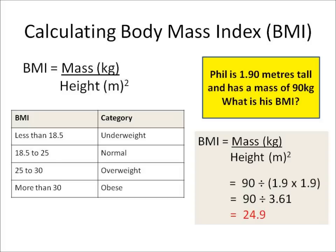Now I need to do the sums in the right order. First of all I need to do the height squared. So I do 1.9 times 1.9 and that comes to 3.61. And finally I do 90 divided by 3.61 and that comes to 24.9.